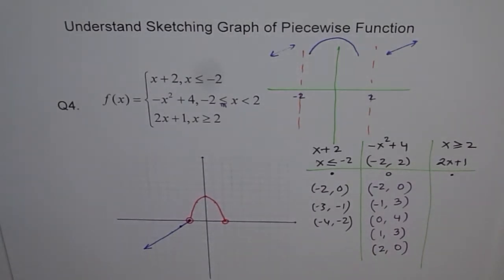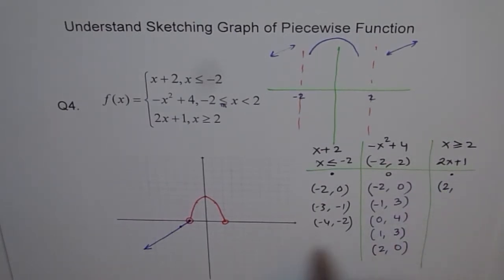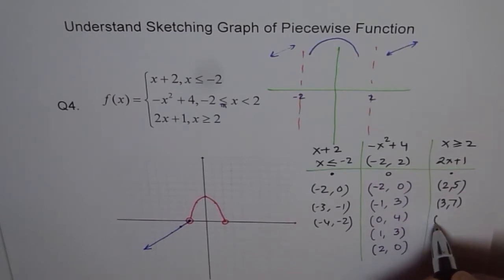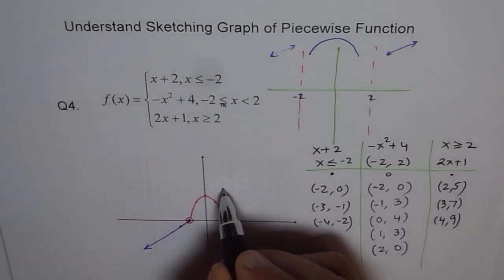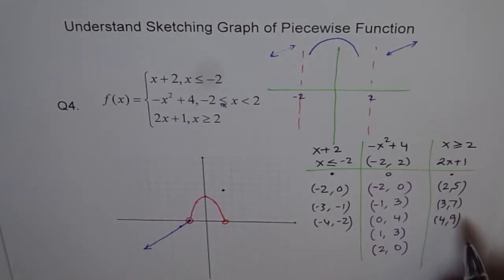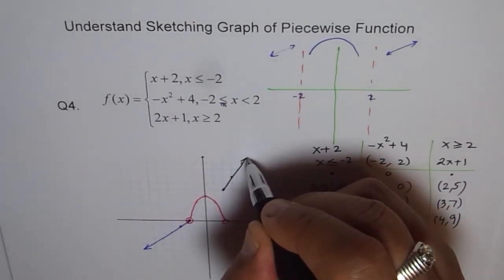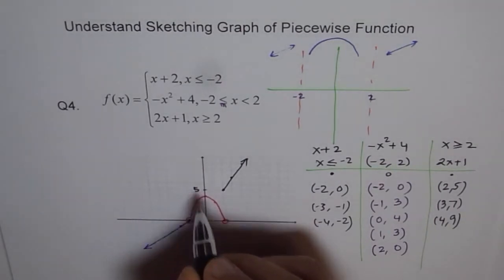For the third piece, x greater than or equal to 2, we start with a filled-in point. At x equals 2: 2 times 2 is 4, plus 1 is 5, giving point (2, 5). At x equals 3 we get 7. At x equals 4 we get 9. We plot (2, 5) as a filled-in point — it's a line with slope 2, so each step we go 2 units up.